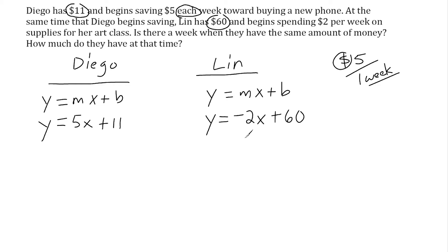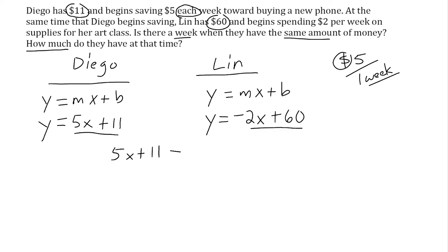Now we have to figure out at what week they will have the same amount of money, and how much money that will actually be. Once both equations are in y equals mx plus b form, we take the expressions after the equal sign from both equations and set them equal to each other. This leaves us with one variable to solve for — x, which represents the number of weeks — telling us at which week Lynn and Diego have the same amount of money.